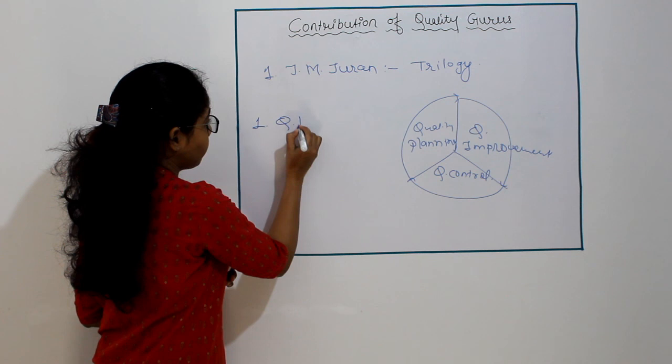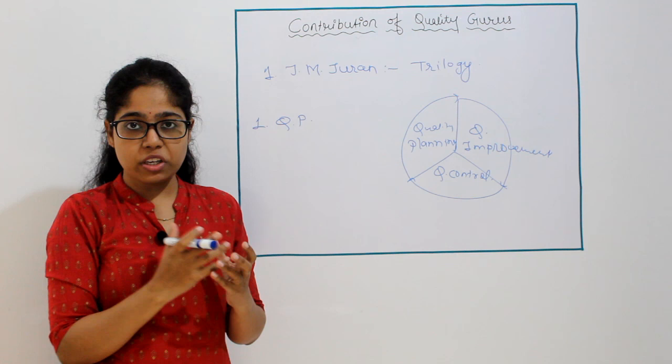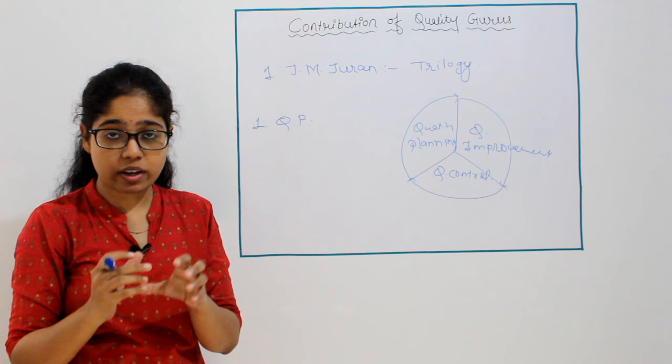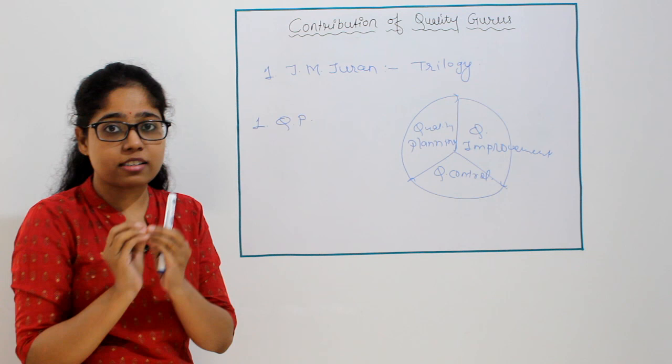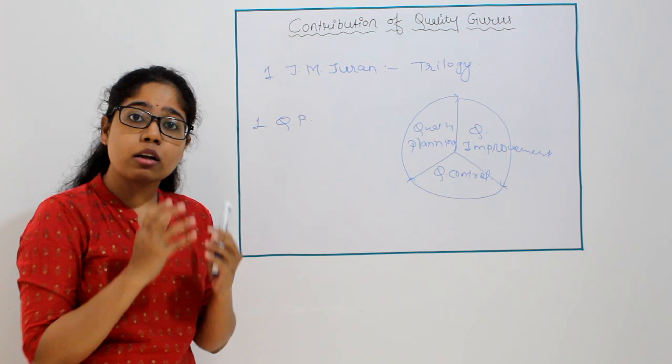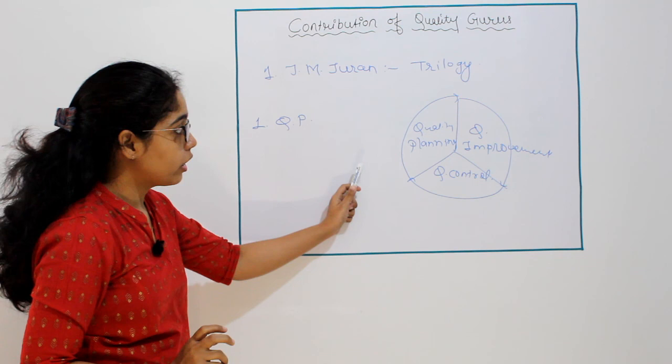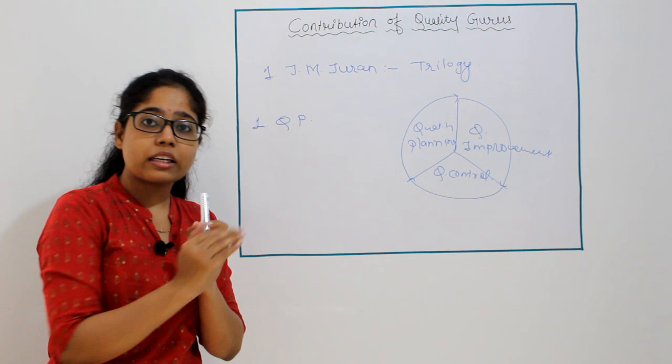Under quality planning, he explained that if we are producing any product, that product should satisfy the customer's needs. Whenever we are planning to produce any product, we have to take into consideration whether that product will be liked by the customer, what will be the feedback, and based on all those points, we have to plan the quality of that product.